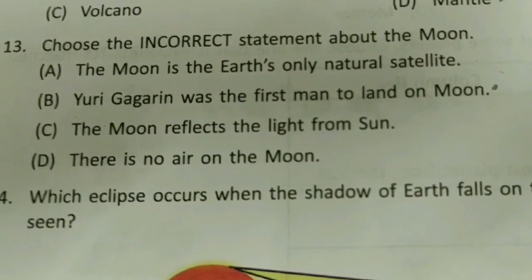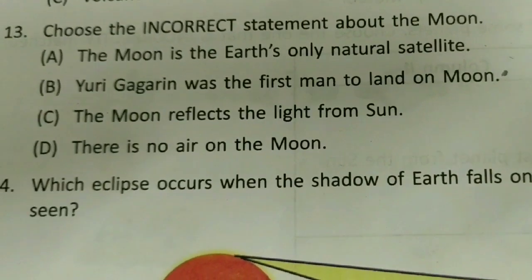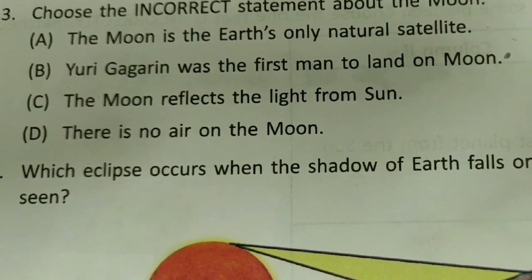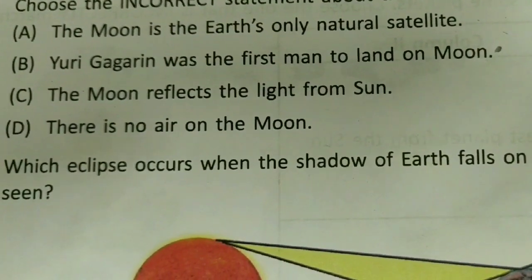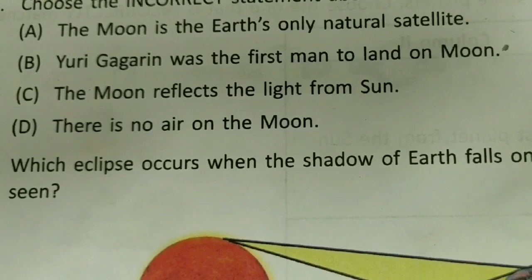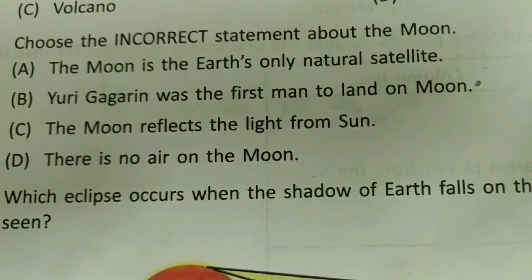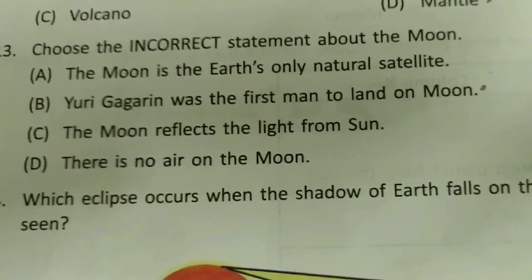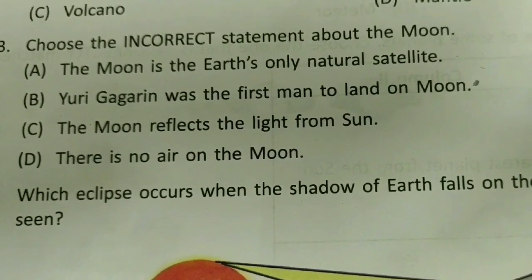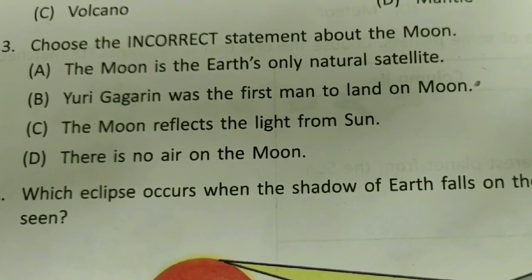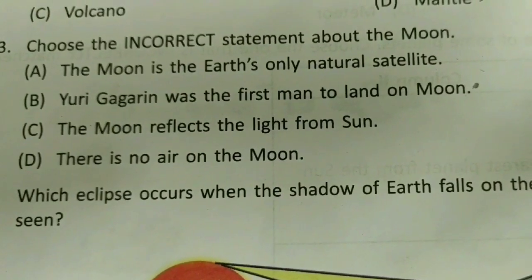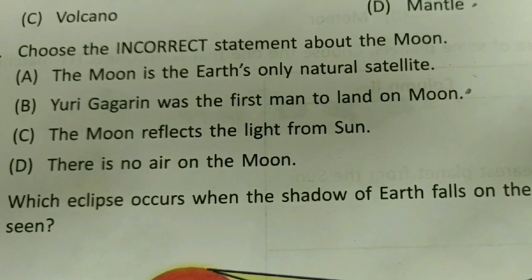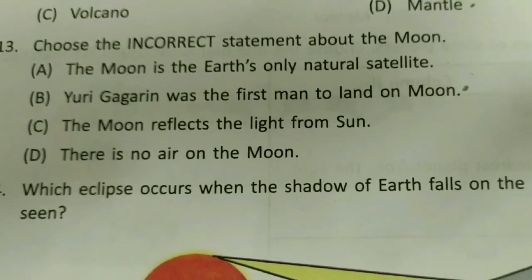Question 13: choose the incorrect statement about the moon. The moon is the earth's only natural satellite — true. Yuri Gagarin was the first man to land on the moon — that is incorrect, because he only went to space and came back, he did not land on the moon. The moon reflects light from the sun — true. There is no air on the moon — true. So the incorrect statement is about Yuri Gagarin.